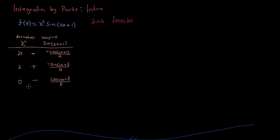So there we have it right here. The next step is I'm going to draw arrows. I'm going to draw an arrow from the x squared pointing to this cosine here, then an arrow from this 2x pointing to the next entry, and an arrow from this 2 pointing to the next one. The reason why is because it tells us how to organize our integral.